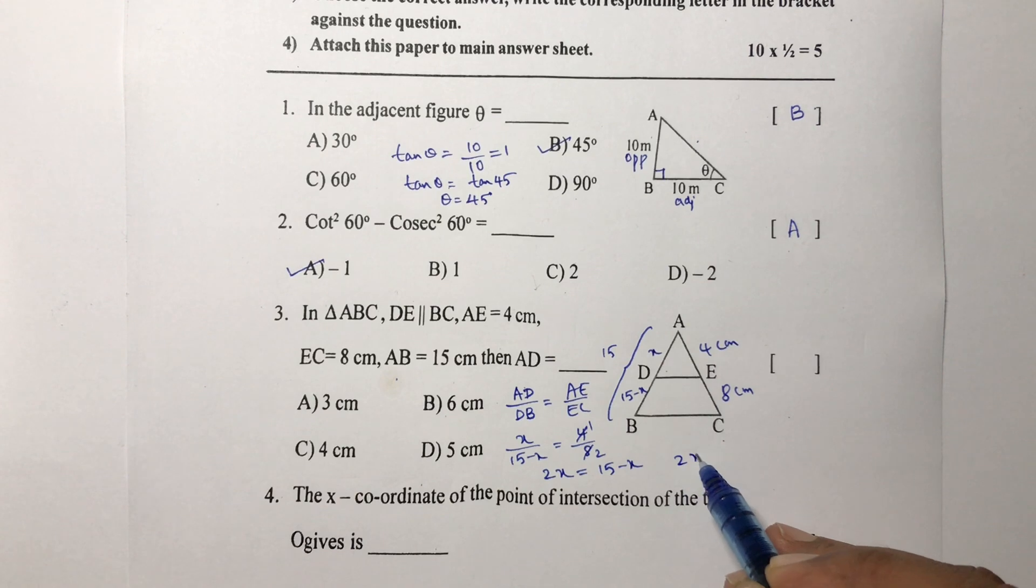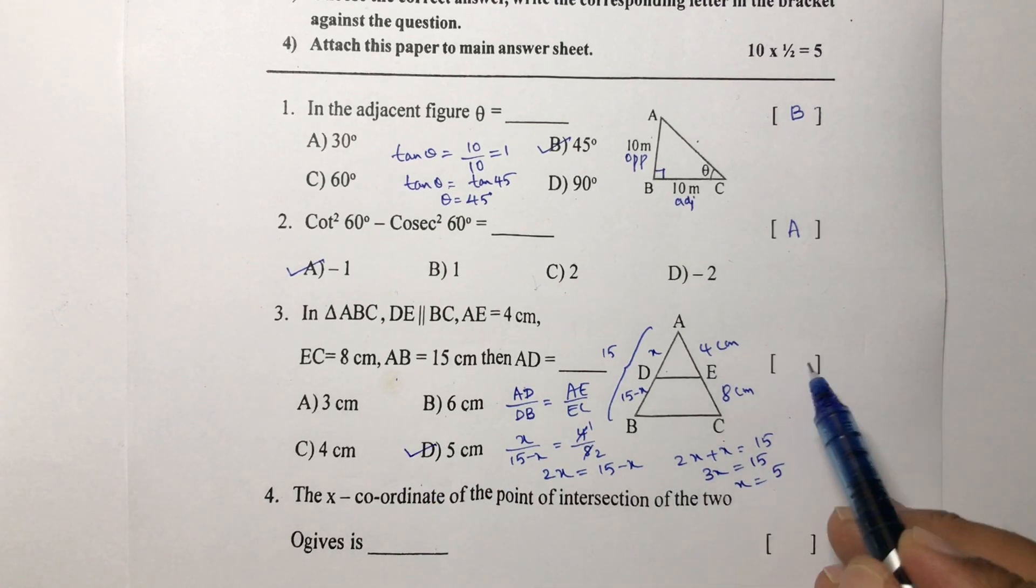4 times 2, if we cross multiply, 2x equals 15 minus x, 2x plus x equals 15, 3x equals 15, x equals 15 by 3 which is 5. The correct option is D.